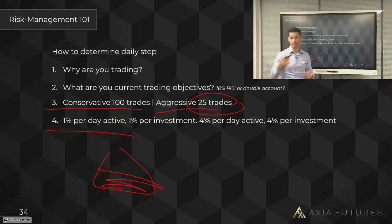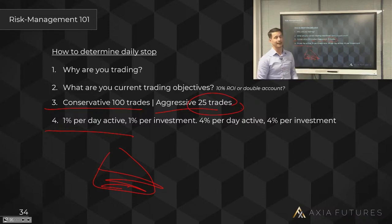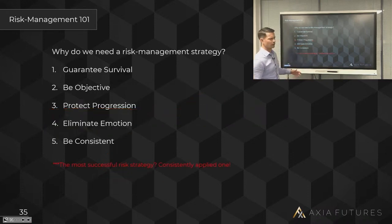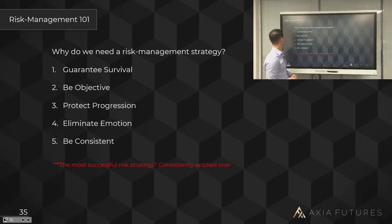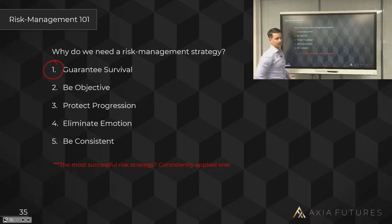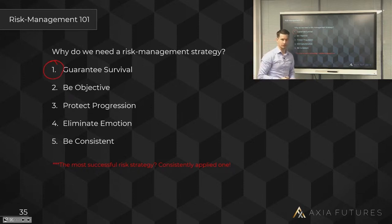Later in your career, as you want to get more aggressive and make those big returns — fine, get aggressive, but do it at the right time. As a guideline: 1% maximum, 5% somewhere in between — determine your risk profile on a daily basis. Why do we need a risk management strategy? First and foremost, you've got to survive. You're not going to make money in your first year — and if you do, you've probably gotten lucky.